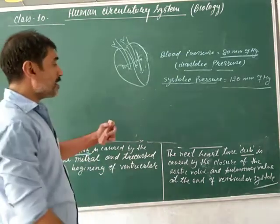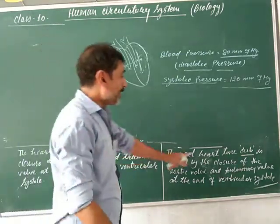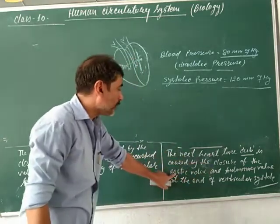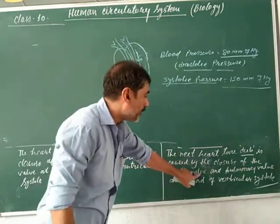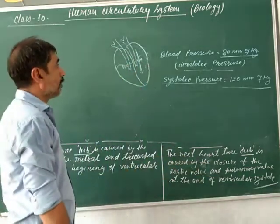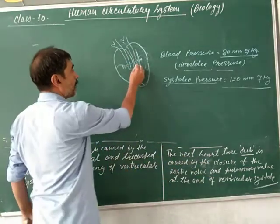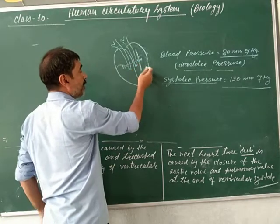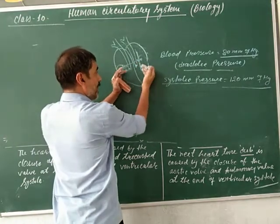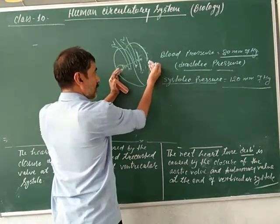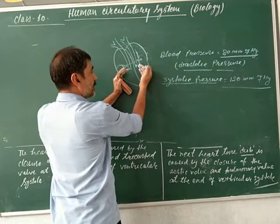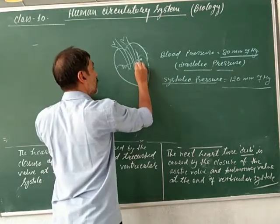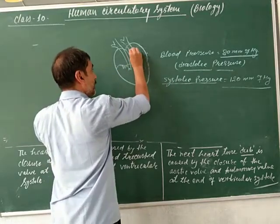The next heart sound, dub, is caused by the closure of the aortic valve and the pulmonic valve. When the ventricles contract and create systolic pressure, the blood passes through the artery.